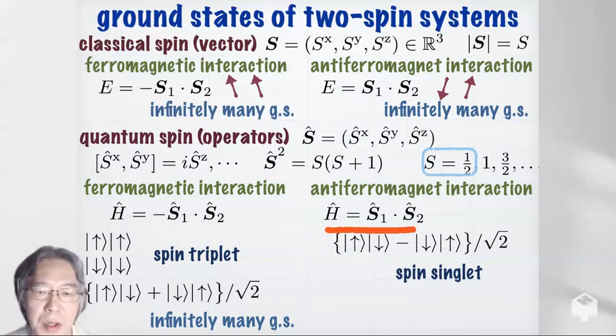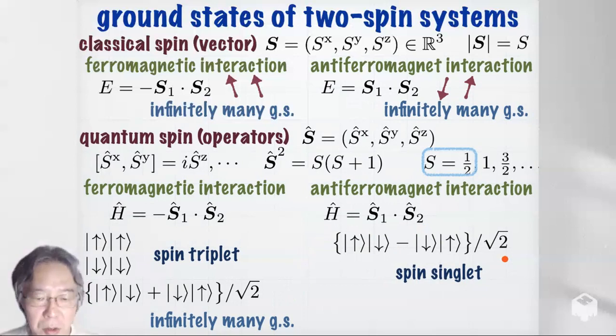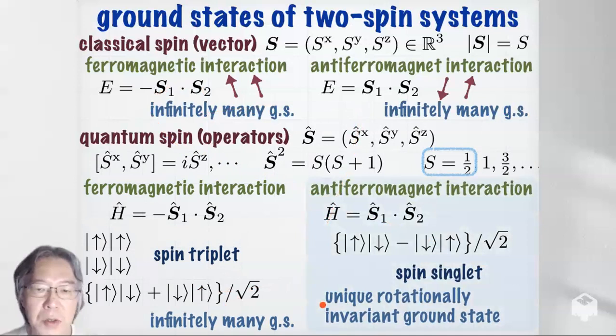For anti-ferromagnetic interaction, the ground state is given by the spin singlet, which is the state with vanishing total spin. This is a rotationally invariant state — if you rotate it, you only get a phase factor and nothing changes. So only in this case the ground state is unique and rotationally invariant. Comparing these four examples, the quantum anti-ferromagnet is special and kind of interesting.